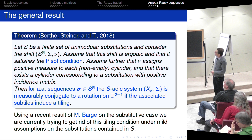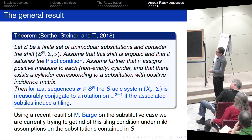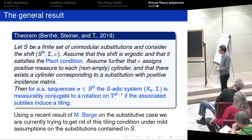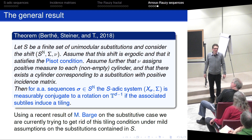We want to use Bartsch's result for our S-adic setting to get rid of the combinatorial conditions — at least under mild conditions — together with Valérie and Wolfgang. This should be the next step. There is a missing condition: if the associated subtiles induce a tiling, which needs to be checked combinatorially. So we want to get rid of this bad guy at least for large classes under mild conditions. That is what we are looking at now. Thank you very much for your attention.